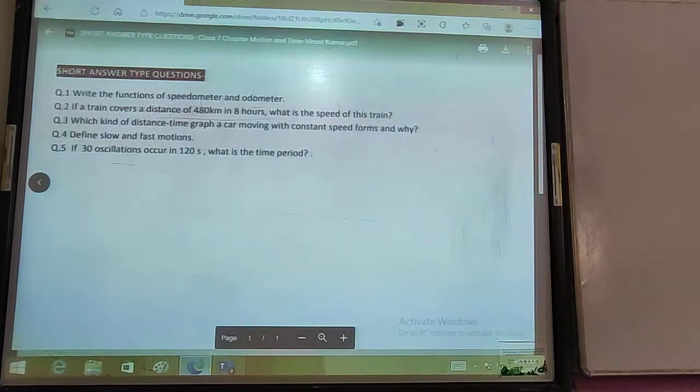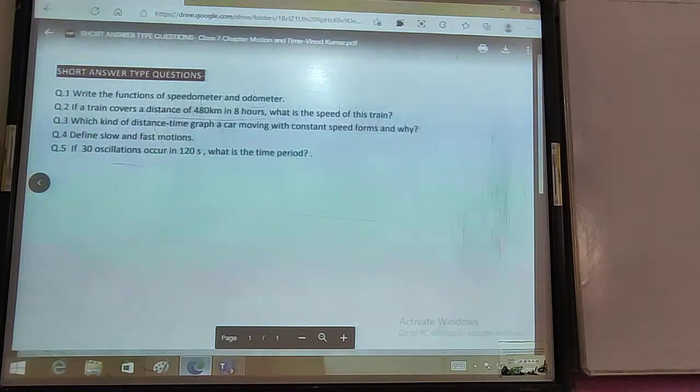Confirm it. Time period is one oscillation. If I have 30 oscillations in 120 seconds, then one oscillation is 120 upon 30. One oscillation is 4 seconds. Time period is 4 seconds.